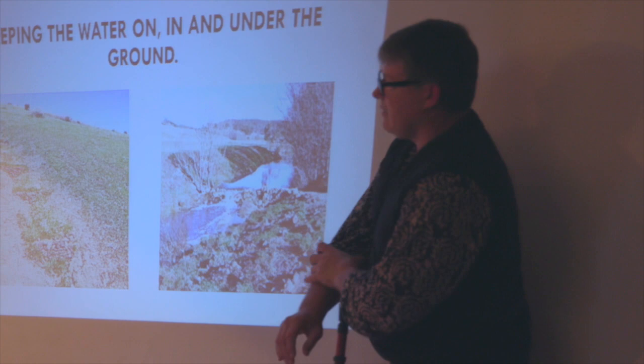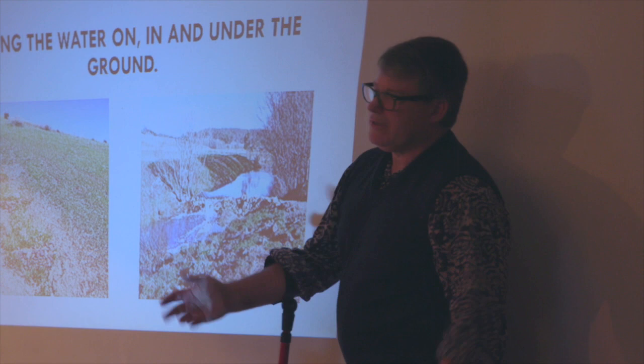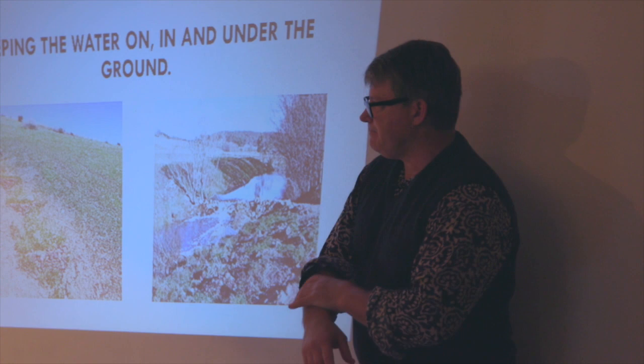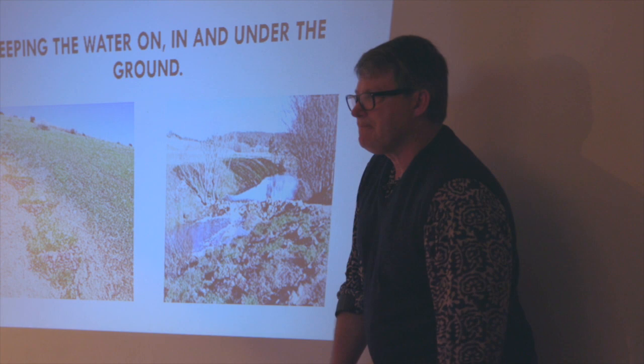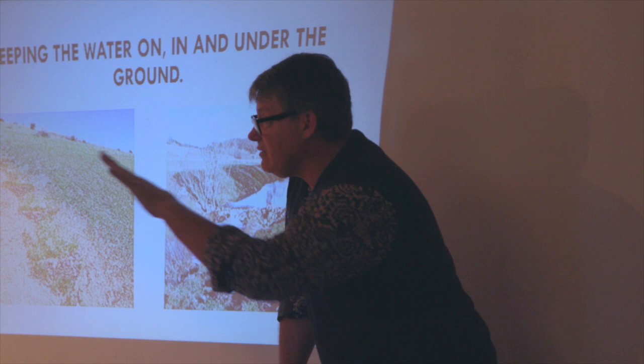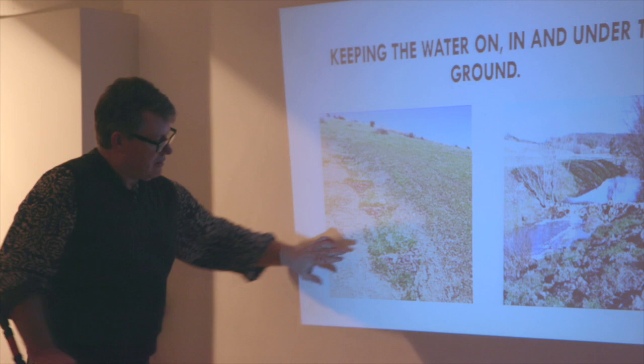Keeping water in, on, and under the ground - that's what we need to do. By doing that we're going to support the small water cycle. You can see these little rocks - there's a term called leaky weirs - what that does is hold the water. Water can still keep moving but stays in the ground. And guess what's there? Grass. Plants. Starting that cycle.